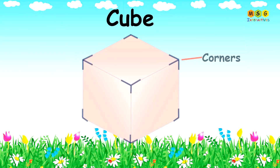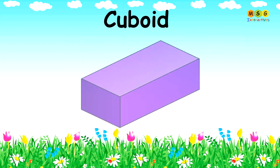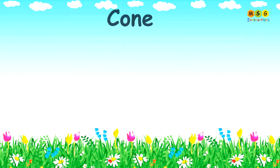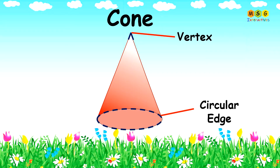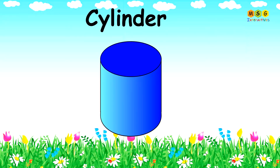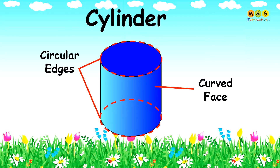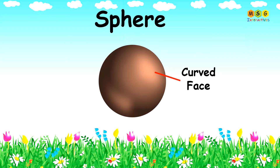A cube has corners, edges, and flat faces. A cuboid also has corners, edges, and flat faces. A cone has a vertex, a circular edge, and a curved face. A cylinder has circular edges and a curved face. A sphere has only a curved face.